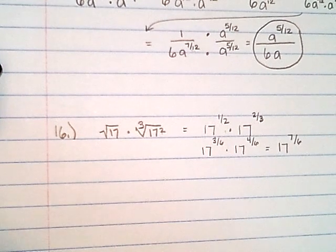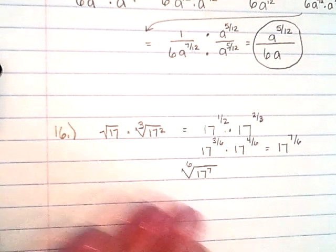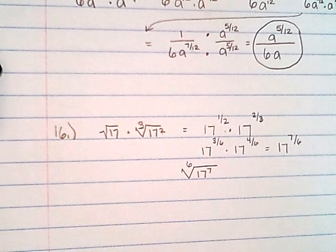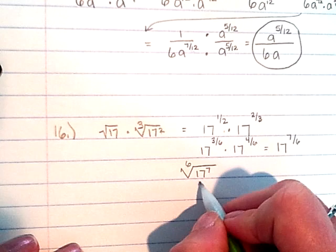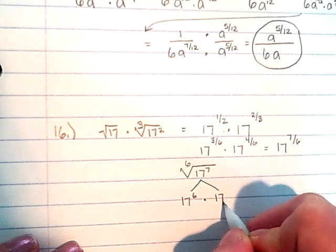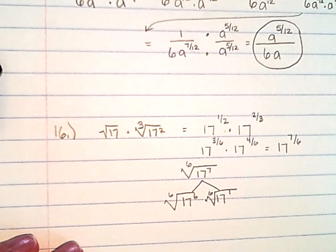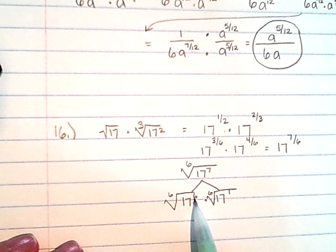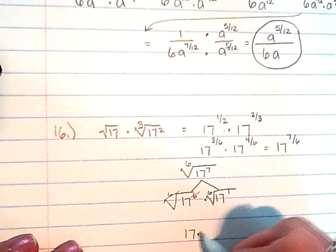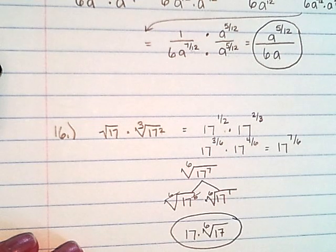Putting this back in radical form, I have the sixth root of 17 to the seventh power. Since the index can't be smaller than any powers inside, I can factor: I write this as the sixth root of 17 to the sixth power times 17 to the first power. The sixth root of 17 to the sixth cancels out and just leaves me with 17 outside, while 17 to the first stays inside because it needs five more to come out. That's the simplified version of number 16.